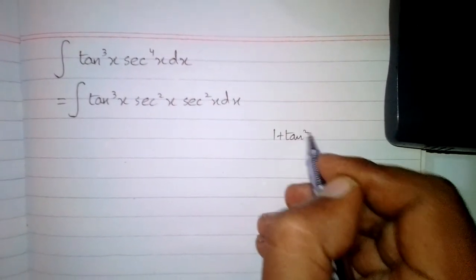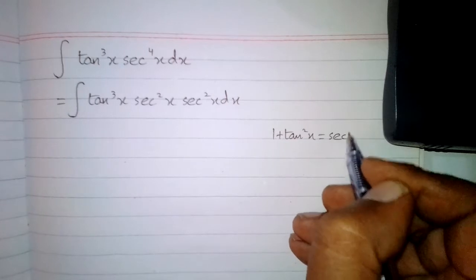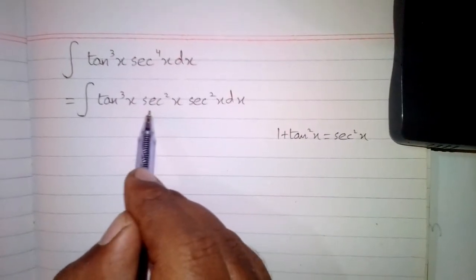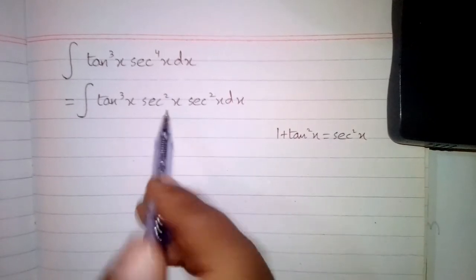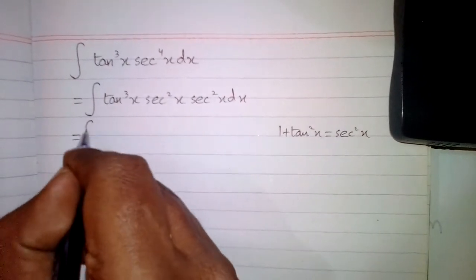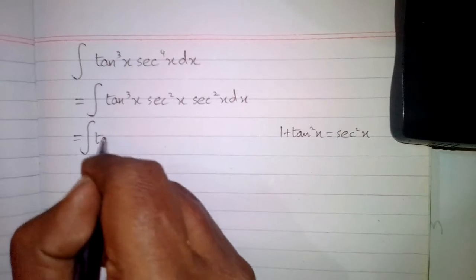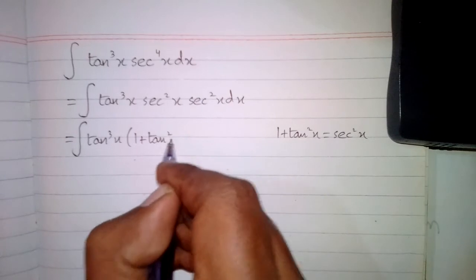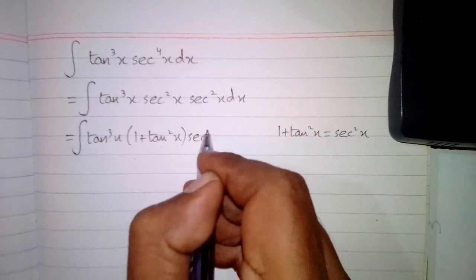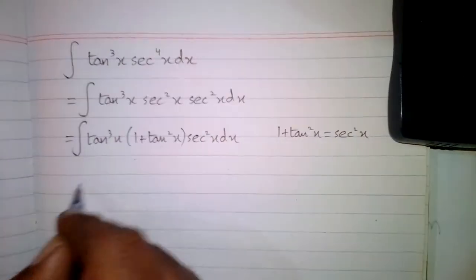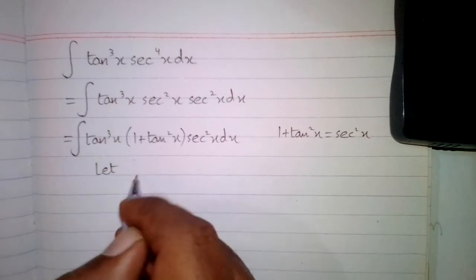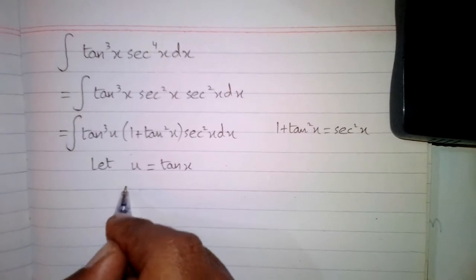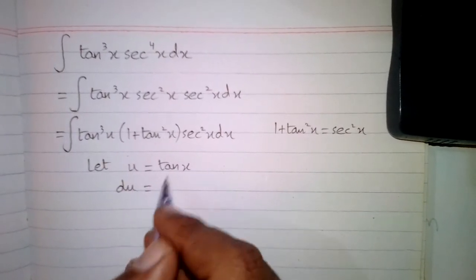Now we know that 1 + tan²x is equal to sec²x, so we will put (1 + tan²x) in place of this sec²x. So we have the integral of tan³x · (1 + tan²x) · sec²x dx.